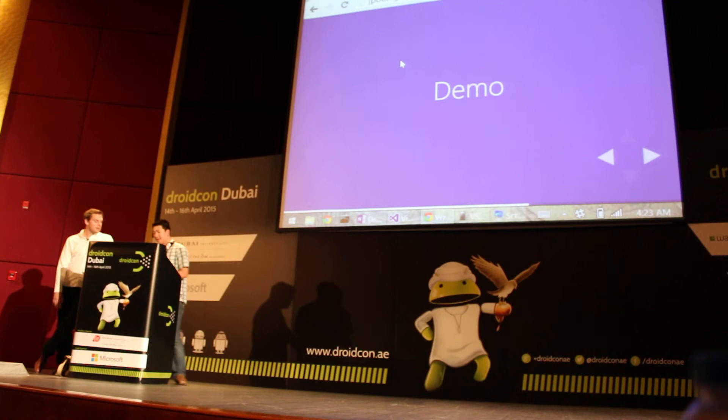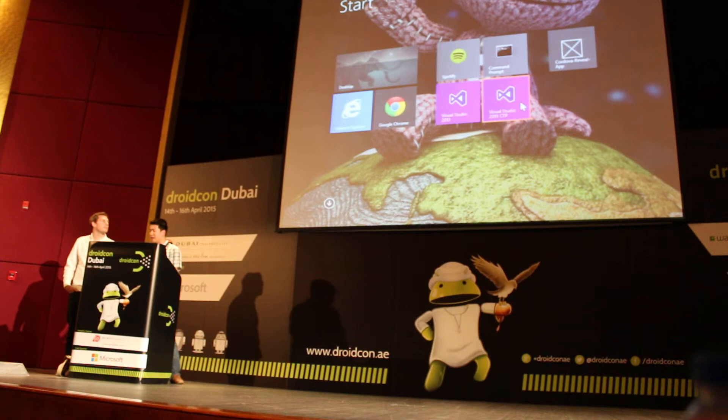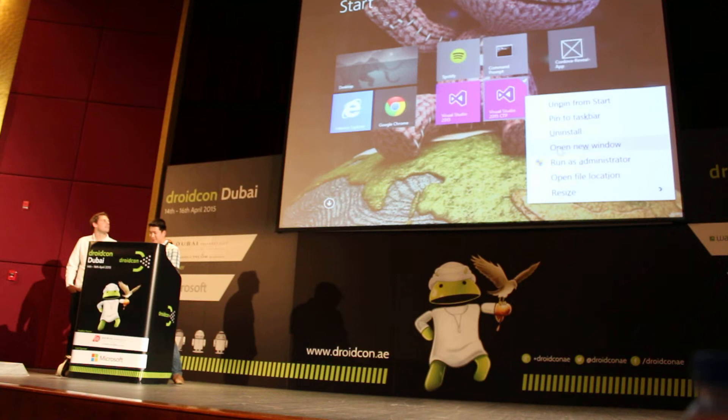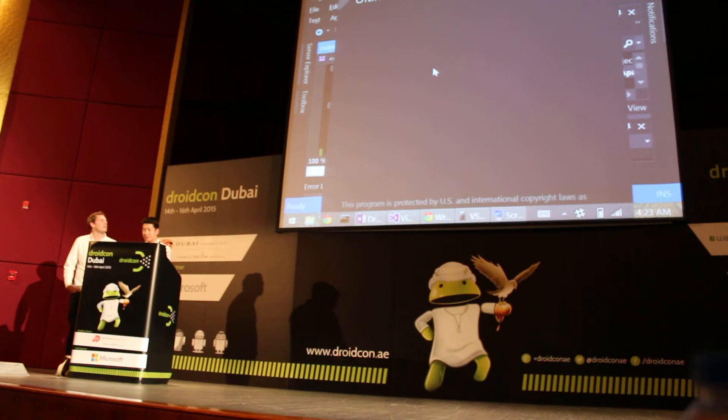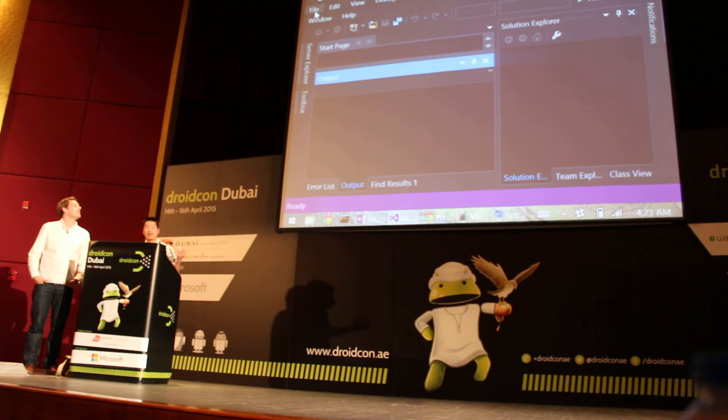What I'm running today is Visual Studio 2013, which is the shipped version, but I want to show you the latest and greatest, which is the CTP — the Community Technical Preview. The Apache Cordova tooling is available on both 2013 and 2015. It already comes prepackaged in 2015, so if you download and install the CTP, it'll come prepackaged with the Cordova tools.